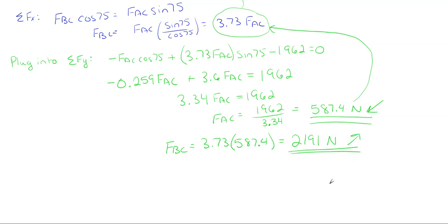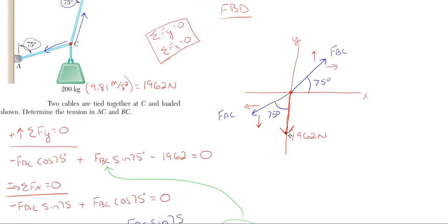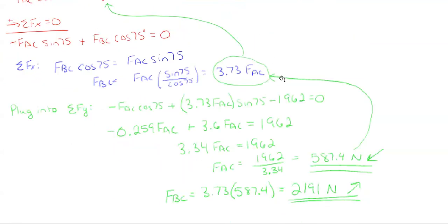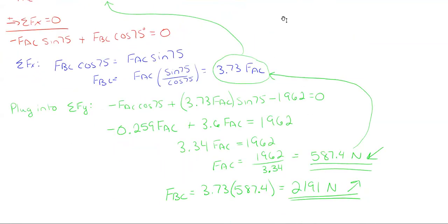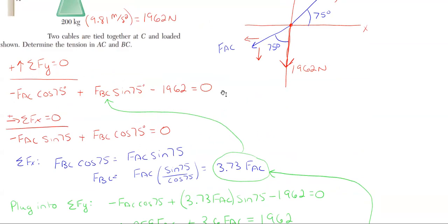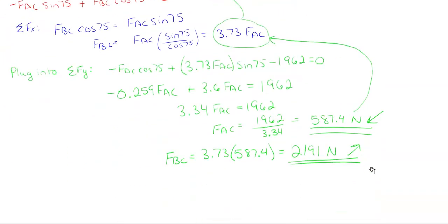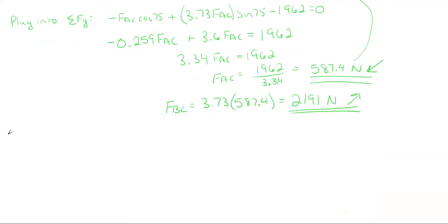So there are my two answers for my two cable tension forces. It does make sense that FBC would be so much larger than FAC simply because the force is pulling downward here and FAC is in the downward direction. So FBC would also have to counter and help out with FAC and the 1962. So it makes sense why FBC was so much larger. Now, if you want to double check these answers of 587 and 2,191, the best way to do that is just to plug them both back into your equilibrium equations and see if you get close to zero. You may not exactly get zero due to rounding purposes, but getting close to zero is reaffirming that, yeah, I've done things correctly here.